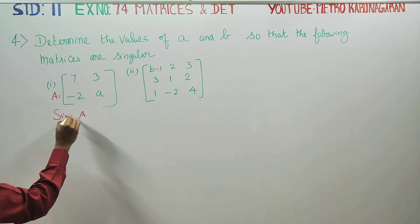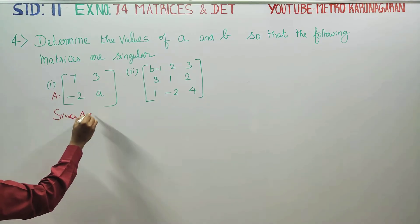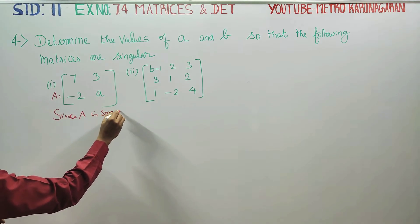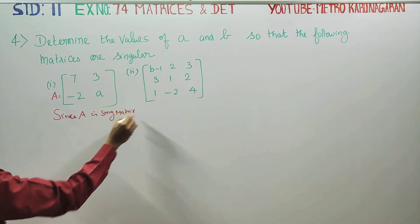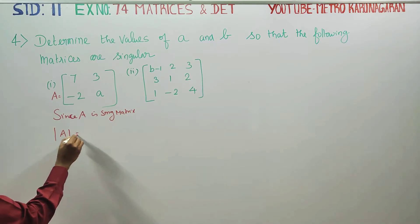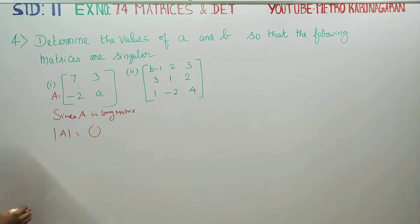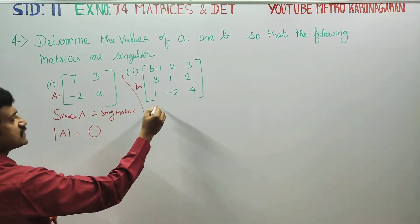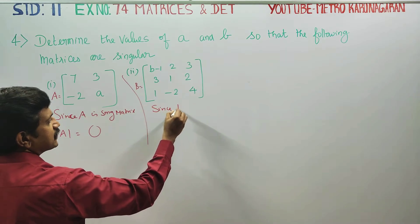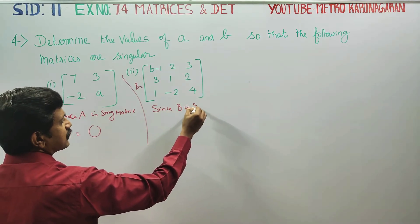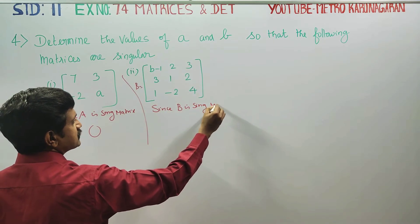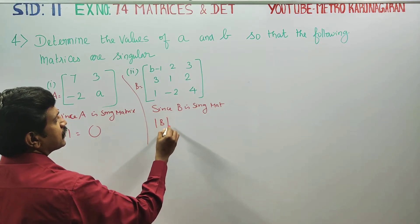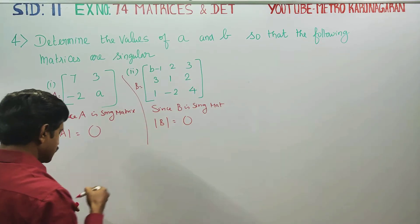Since A is a singular matrix, the determinant of A is equal to 0. That is the concept. Similarly, if B is a singular matrix, the determinant of B is equal to 0. This is the concept we use.